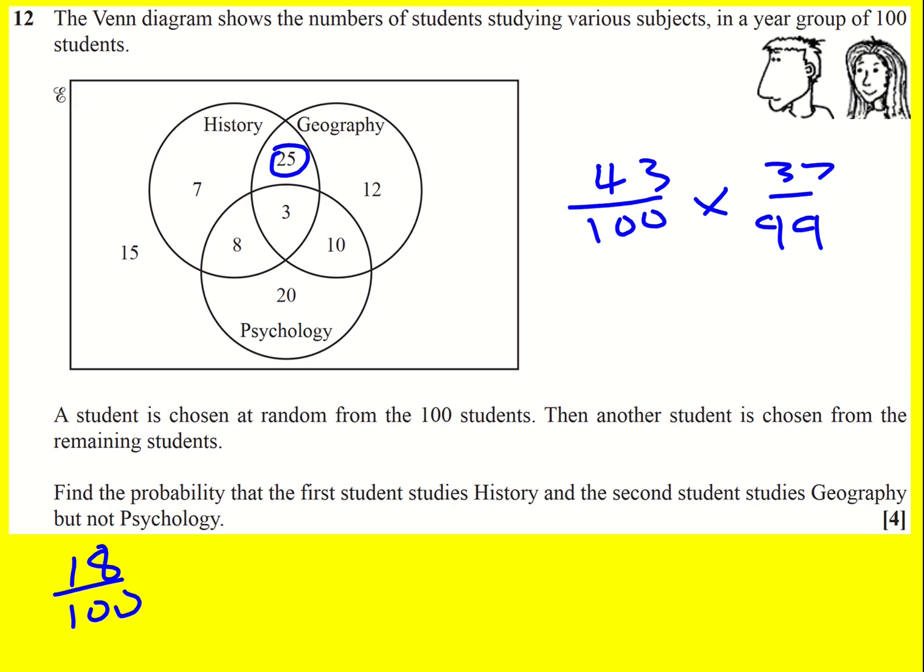then I'm not going to affect the number of people that I can pick the second time around, because the second time is geography but not psychology. So essentially, I'm picking some of these people, and then I can pick any of these people the second time around. So it's 18 over 100 times 37 over 99. That's one possibility.